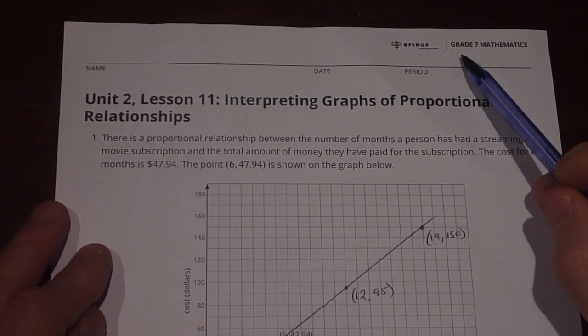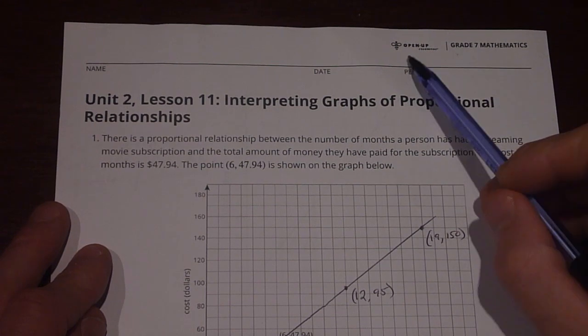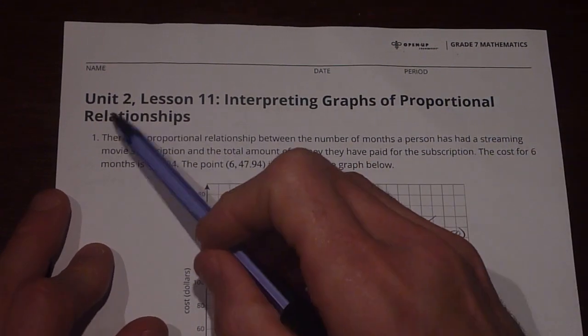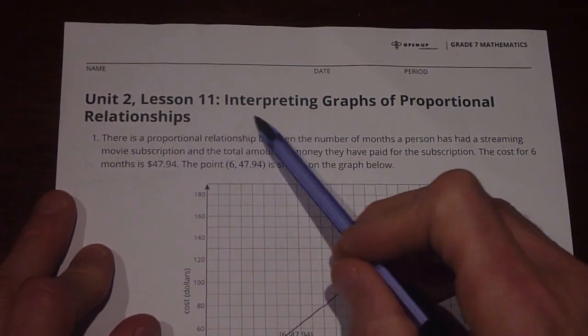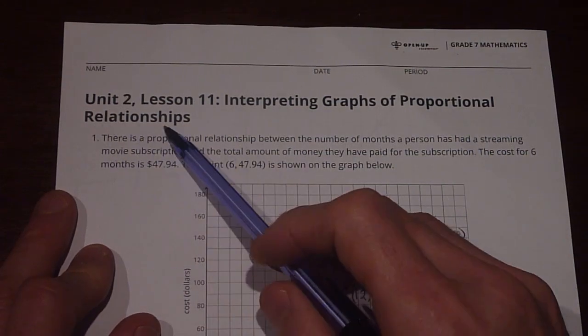Hi everybody, we're going to do Grade 7 Mathematics for Open Up Resources, Unit 2, Lesson 11, Interpreting Graphs of Proportional Relationships.